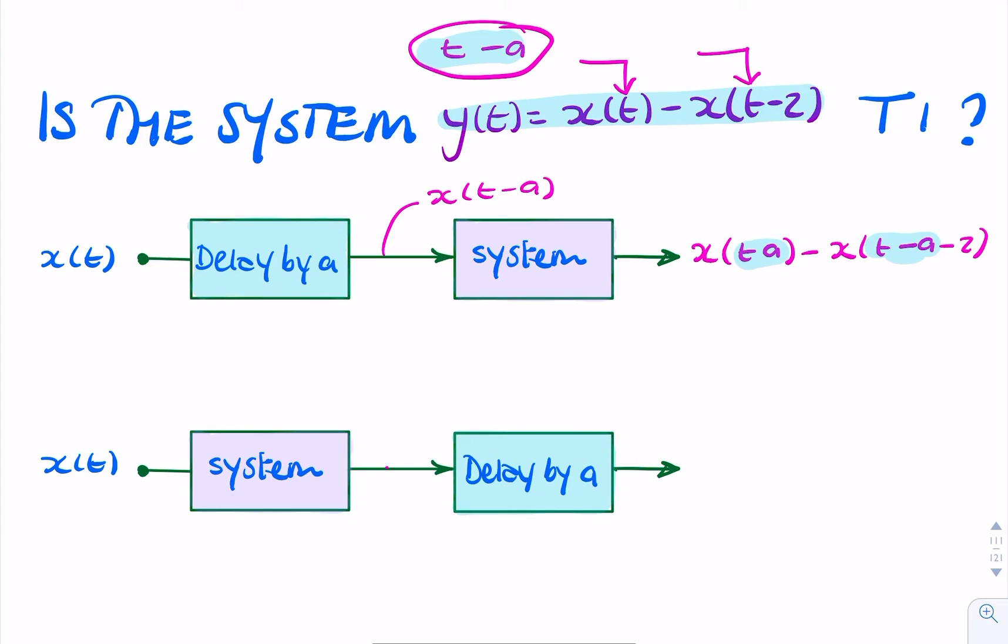And I'll check if that gives me the same result as if I simply applied x to the system and then delayed the output. So x applied to the system, the output is what the question tells us.